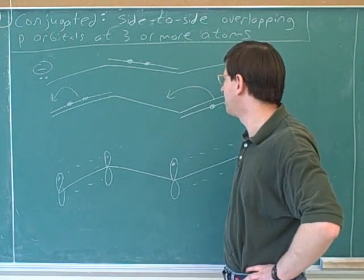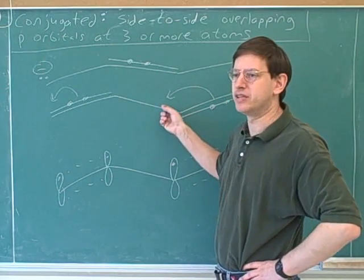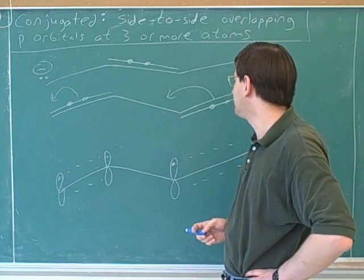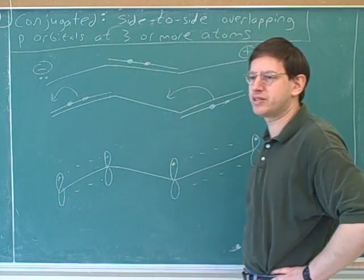So what's the real molecule look like? Well, it's really a blend of these two pictures. The real molecule is a blend of these two pictures because the electrons can be either on the ends or between the two middle carbons.